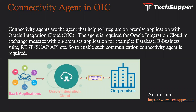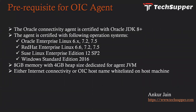So the connectivity agent is required in order to enable on-prem communication with Oracle Integration Cloud. Before we install the connectivity agent, there are some prerequisites for the machine. Oracle connectivity agent is certified with Oracle JDK 8 or higher, which means JDK 8 or a higher version should be installed on the machine. The agent is certified with operating systems like Oracle Enterprise Linux 6.x, 7.2, 7.5, Red Hat Enterprise Linux 6.6, 7.2, 7.5, SUSE Linux Enterprise Edition 12 SP2, and Windows Standard Edition 2016. It requires 8 GB memory with 4 GB heap size dedicated for the agent JVM, and either internet connectivity or the OIC hostname and port should be whitelisted on the machine where you are going to install the OIC agent.